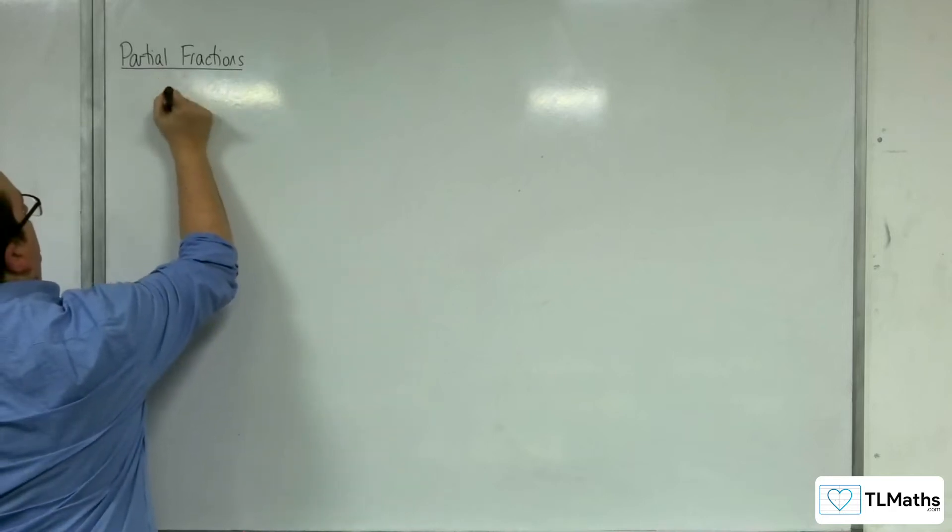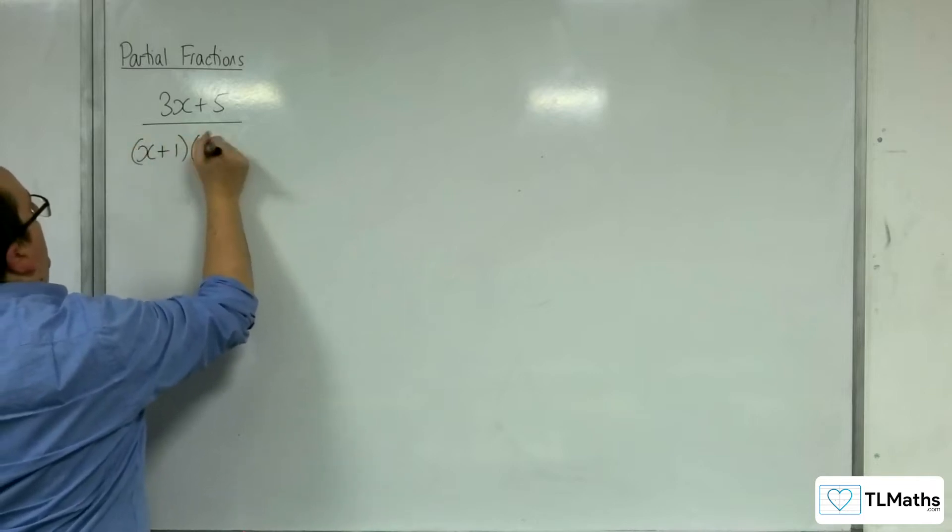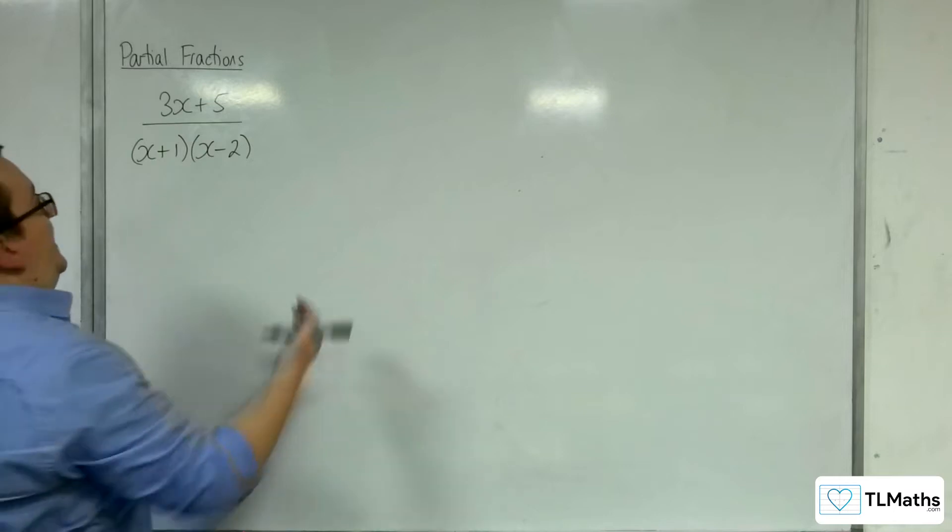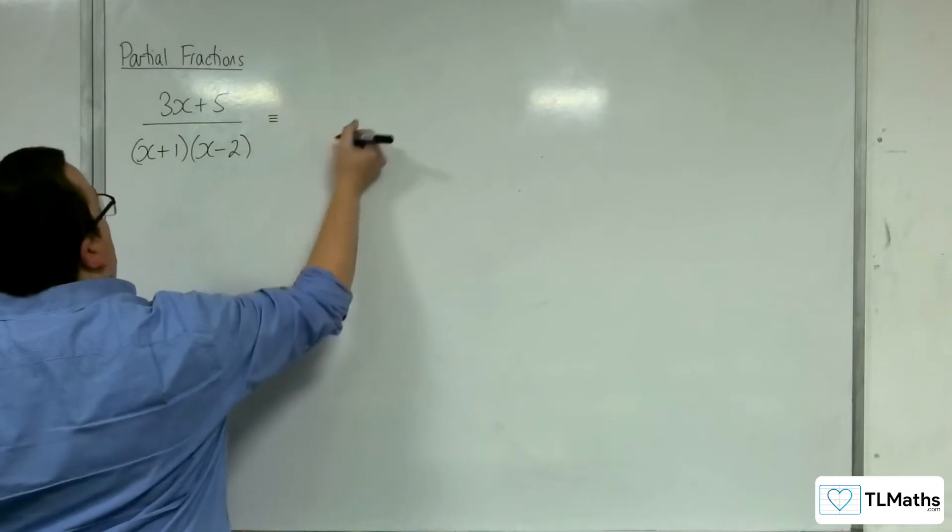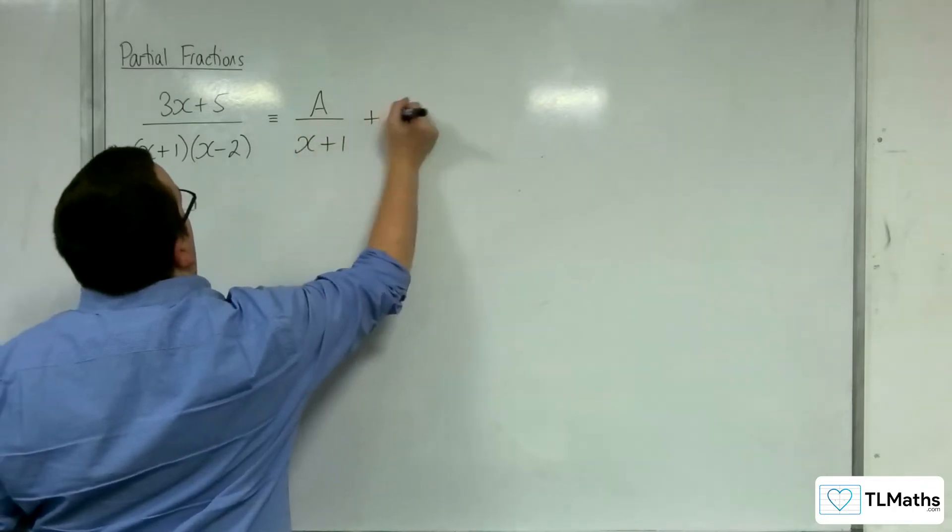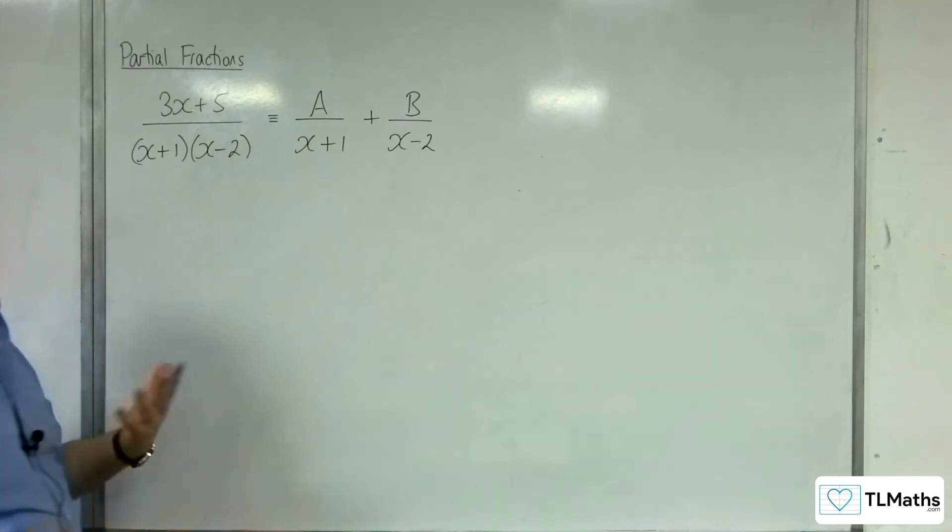let's say we had 3x plus 5 over (x+1)(x-2). I would expect you to know that we can split that up into partial fractions where we have A over x+1 plus B over x-2, and I would expect you to know how to work out A and B.